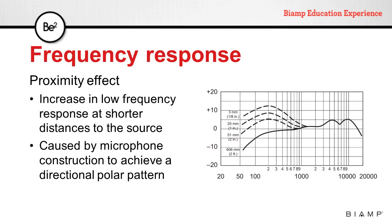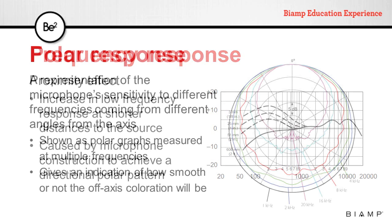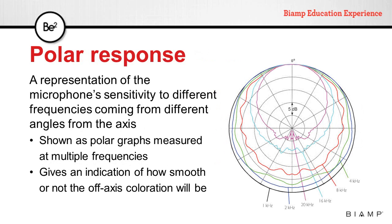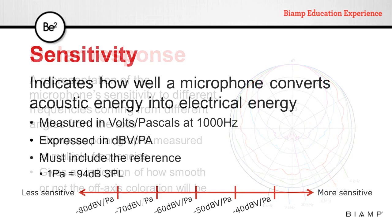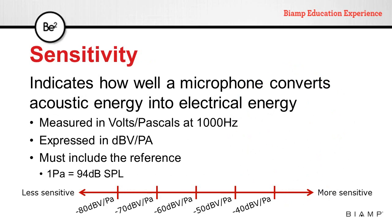Proximity effect is caused by the microphone's construction to achieve a directional polar pattern. Some microphones will even show a polar response — a representation of the microphone's sensitivity to different frequencies coming from different angles from the axis. In essence, this is multiple polar patterns at different frequencies, and it can give an indication of how the microphone will behave when sounds are not coming directly on axis.